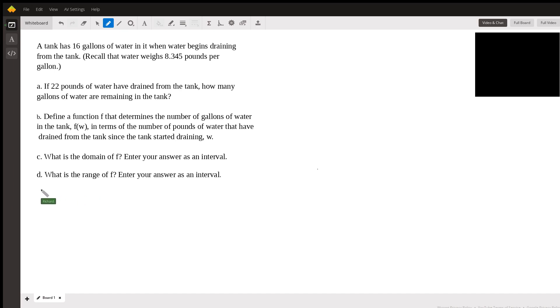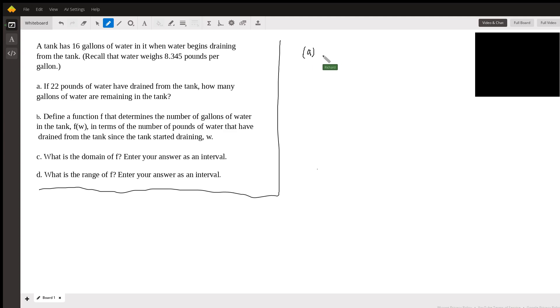We'll just go ahead and solve the problem as written and hope that does the trick. Well, we have a tank with 16 gallons of water in it, and they're interested in the remaining water. So the remaining amount of water is equal to the starting amount minus the amount that was drained.